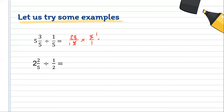So now we multiply: 28 times 1 is 28, and 1 times 1 is 1. As we know, if a fraction has a denominator of 1, it expresses a whole number. So our final answer is 28.